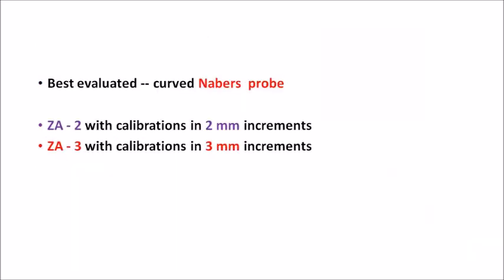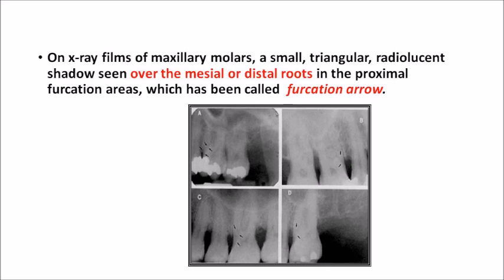Furcation involvement is best evaluated using a curved Nabers probe. The Nabers probe has markings at 3, 6, 9, and 12 — that means at 3-millimeter increments. Another probe used for detecting furcation involvement is the Zda probe: Zda2 has 2-millimeter increment markings and Zda3 has 3-millimeter increment calibrations. There are many other furcation probes like PQ2N, CH3, and HO2, but the name you should not forget is Nabers. On x-rays of maxillary molars, a small triangular radiolucent shadow will be seen over the mesial or distal root in the proximal furcation area — this is called a furcation arrow.